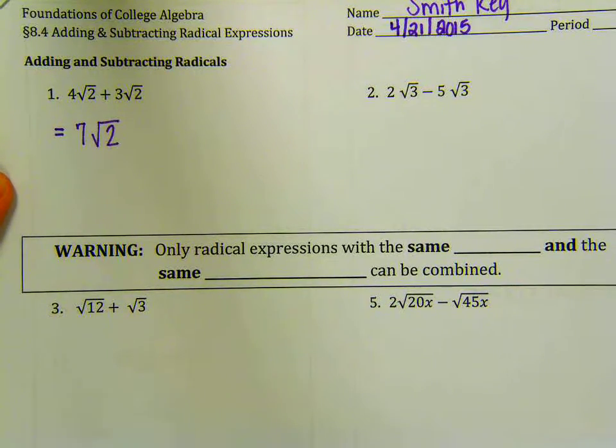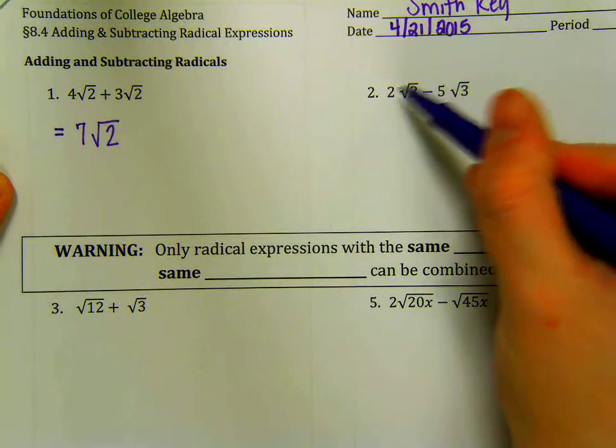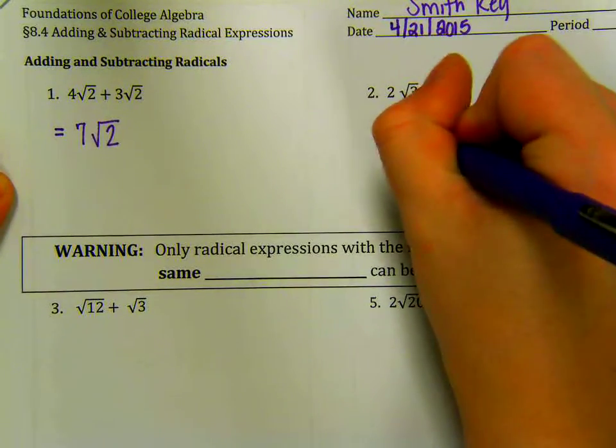Number 2 is the same thing, now we're just subtracting. I have the same radicand, the same index. So this answer is going to be what? Perfect, negative 3.